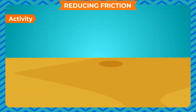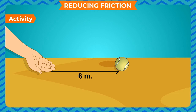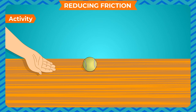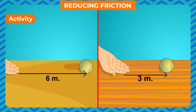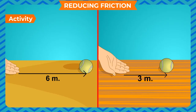Friction depends upon the nature of the surface in contact. Take a ball and roll it on a cemented floor and measure the distance covered. Repeat this on a rough surface with the same force, and measure the distance again. The ball covers a larger distance on the cemented floor because the frictional force between the cemented floor and the ball is less. We can conclude that friction depends upon the roughness or smoothness of the surface in contact.